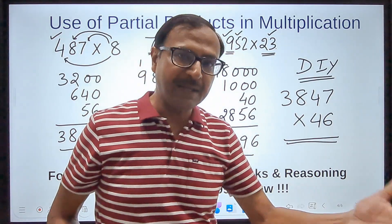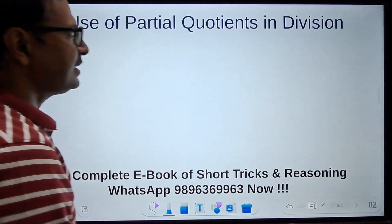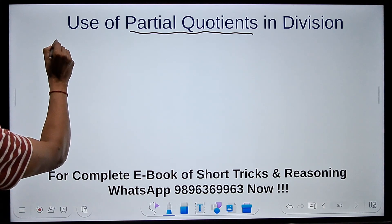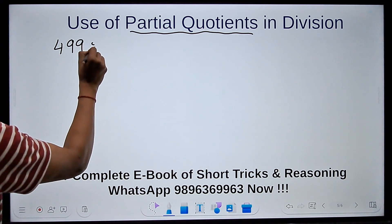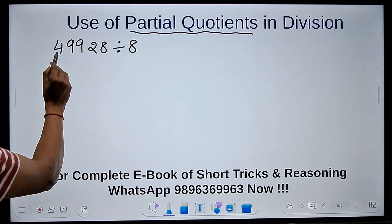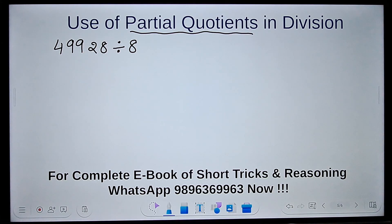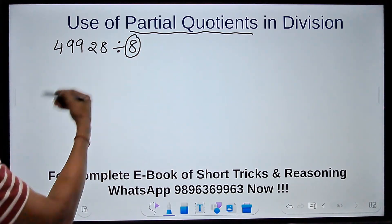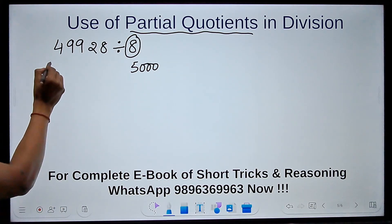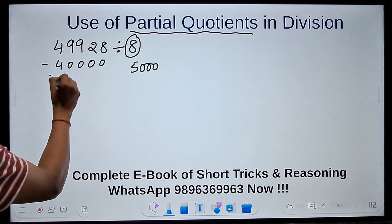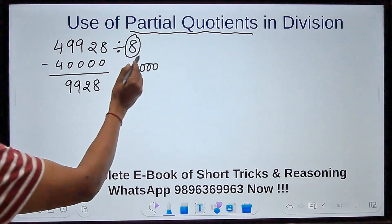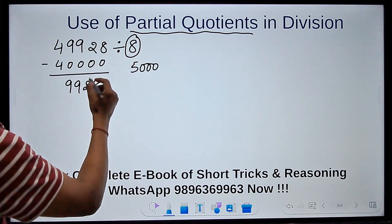Let's see now the use of partial quotients in division. Here we have a question where I need to divide 49928 by the number 8. How do I do it? See, this is like 49,000 something. Most students know that 8 times 5 is 40. So if I do 8 times 5000, it will be 40,000. I'll just subtract 40,000 from this number and I will get 9928, and this becomes my first partial quotient.